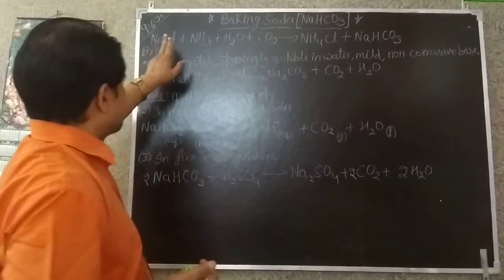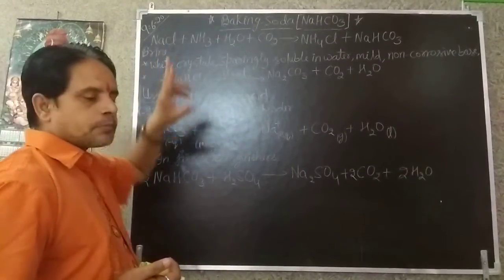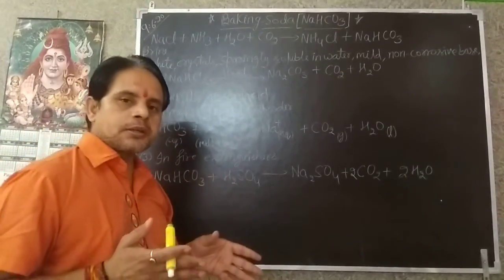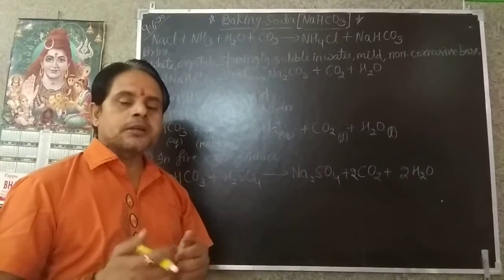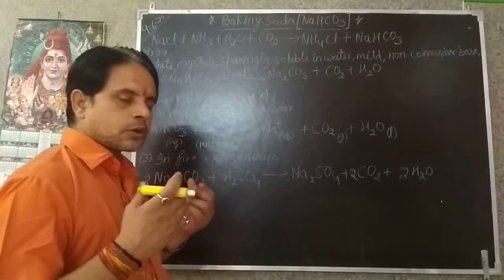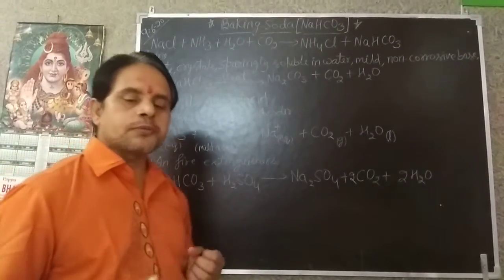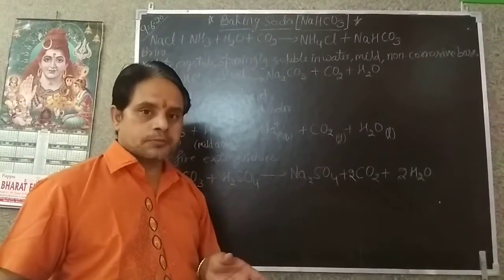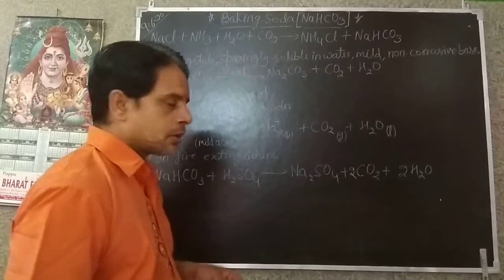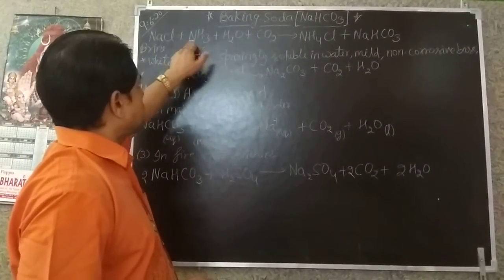Baking soda is prepared through the brine reaction. What is brine? Common salt NaCl solution, right? So concentrated solution of common salt, that is NaCl sodium chloride, this is called brine. And when we add ammonia,